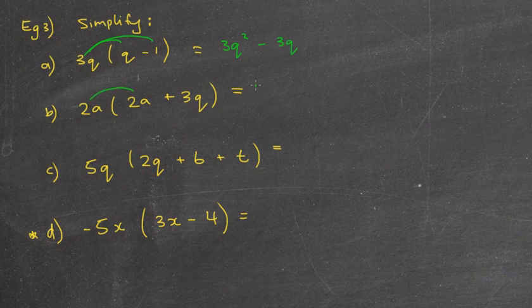2a times 2a is 4a squared. 2a times 3q is 6q.